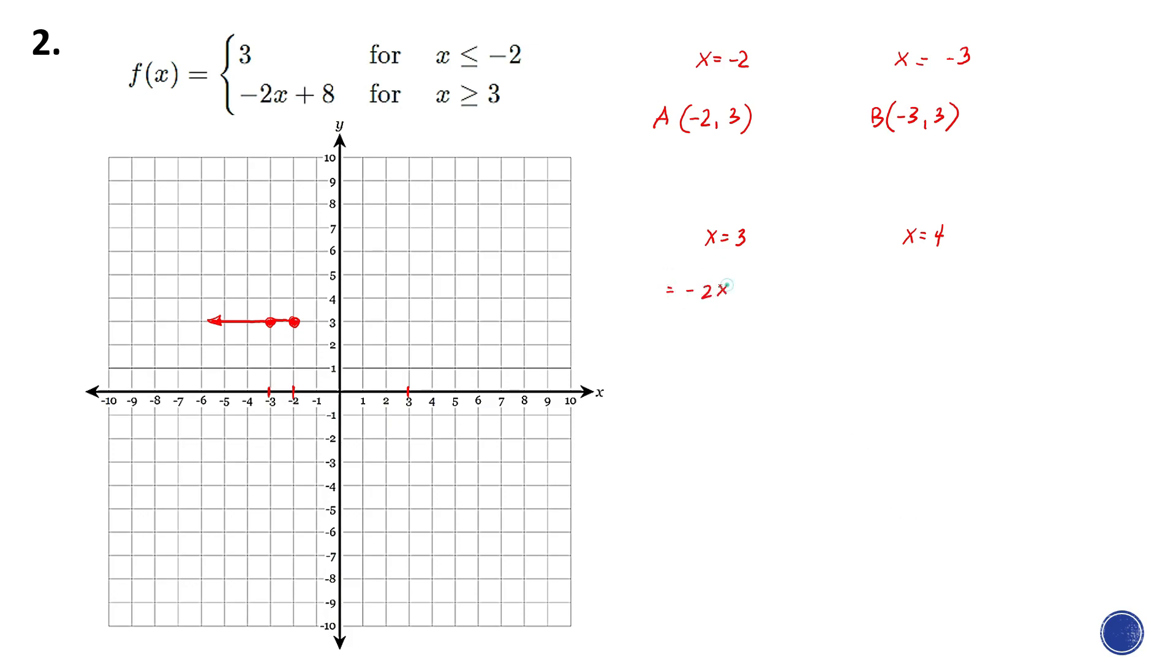Using the expression -2x + 8, -2 times 3 is -6 plus 8, which equals positive 2. So our point C will be (3, 2).